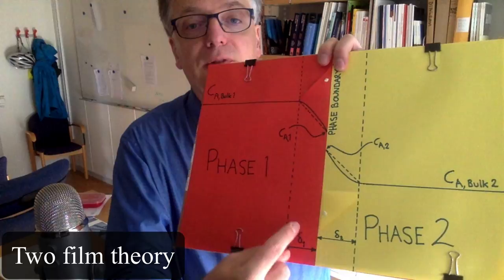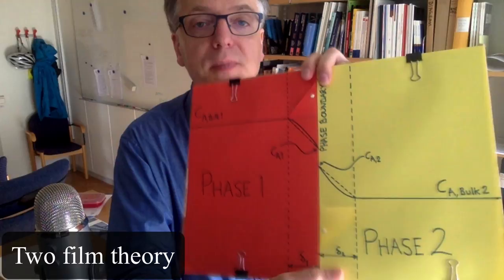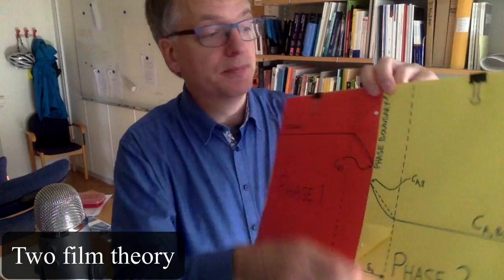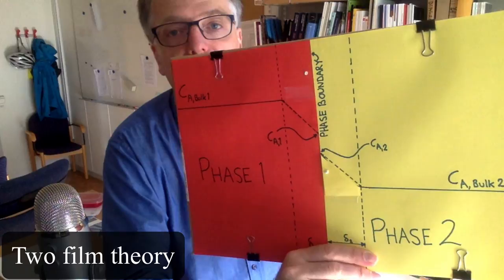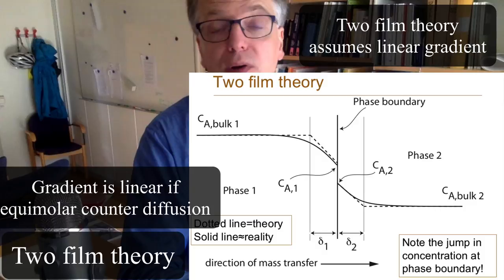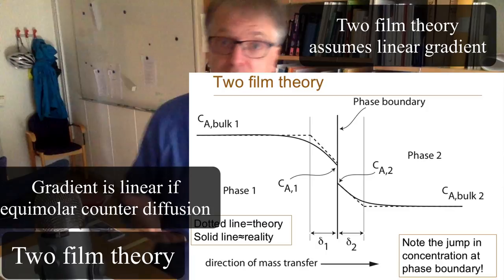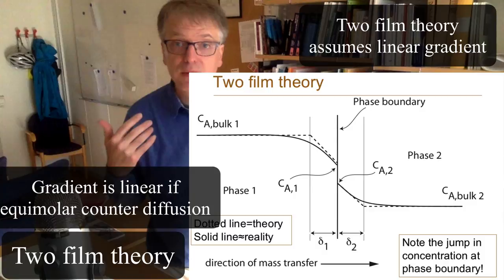The two-film theory takes things a step further. Looking at these two films with thickness delta one and delta two in the second phase, the two-film theory assumes that the concentration gradients are linear — constant up to a point and then it changes linearly. Linear concentration gradients occur when you have equimolar counter diffusion, so the two-film theory works nicely in that case.